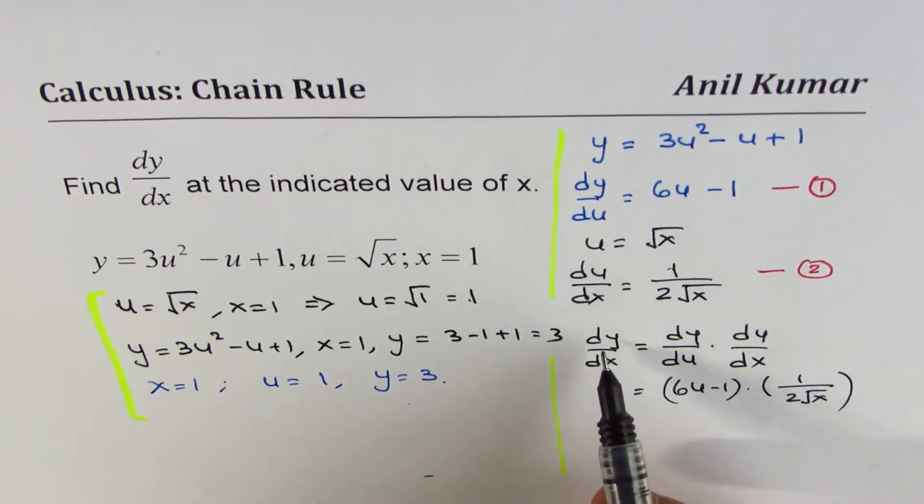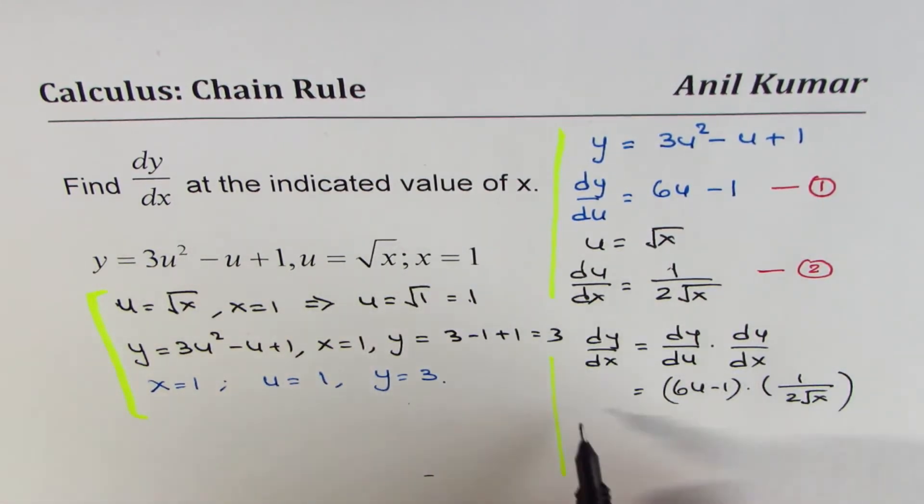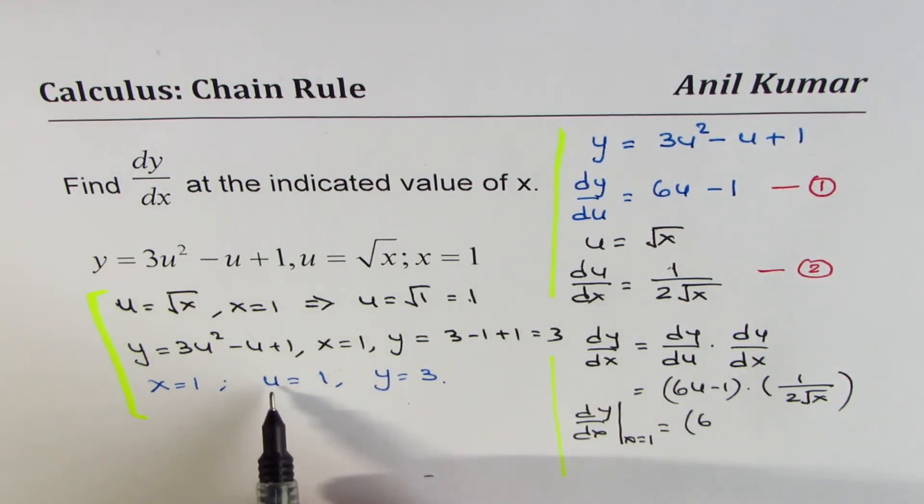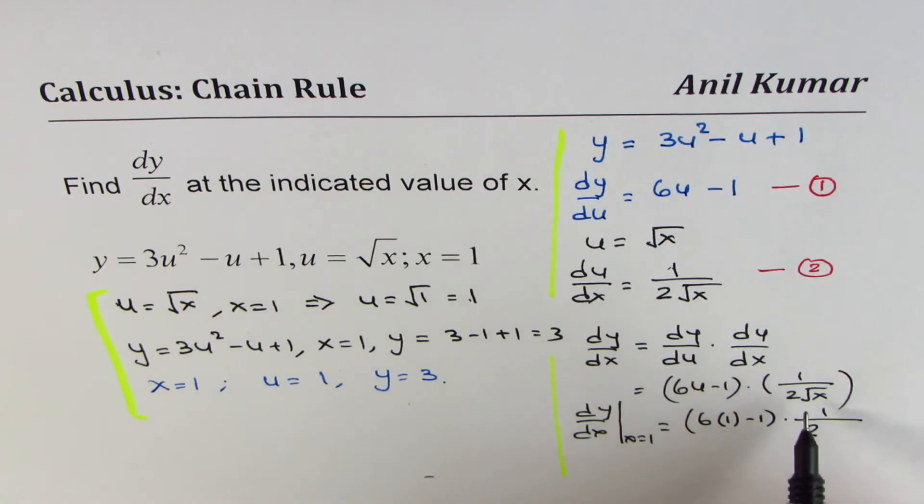We need to find the value at the indicated value, which is x equals 1. So dy/dx at x equals 1 will be 6 times, what is u at 1? When x is 1, u is 1. So we'll replace that by 1 minus 1 times 1 over 2. And what is x? x is given to us as 1, so square root of 1.